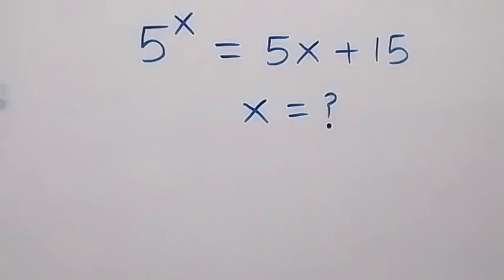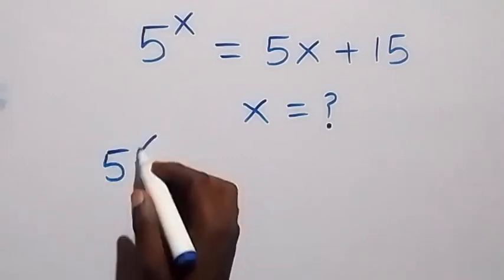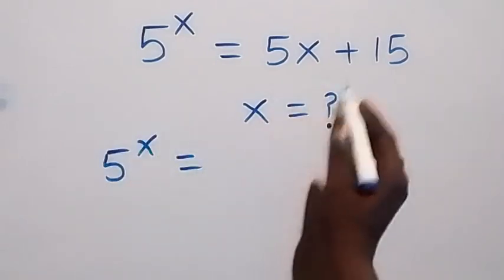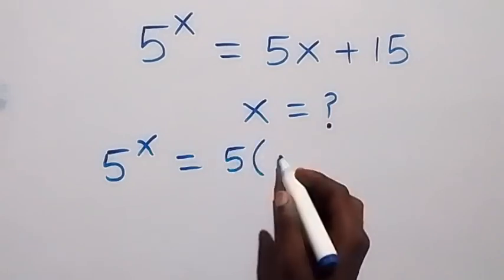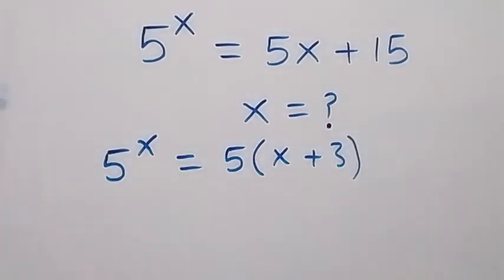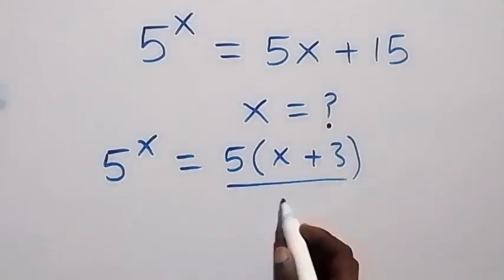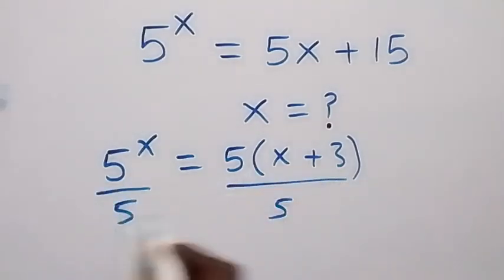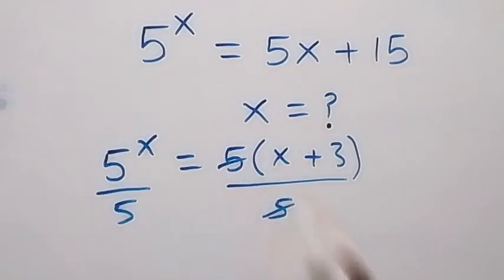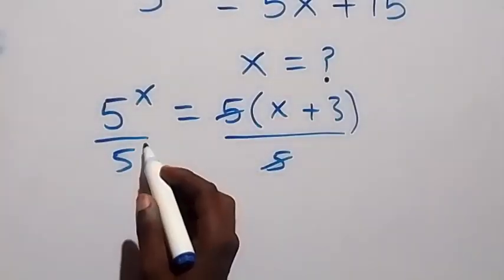Hello y'all, welcome. How to solve for x in this nice algebra problem. From here we can rewrite this as 5 raised to power x equals — here we factor as 5, and we have 5 into bracket x plus 3. From here we can divide both sides by 5 so as to cancel this 5, and here 5 cancels each other, which is the same thing as 5 raised to power 1.